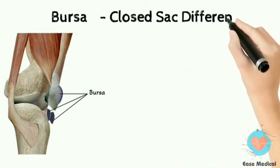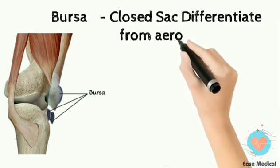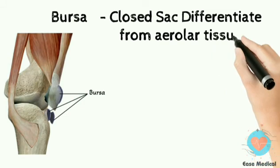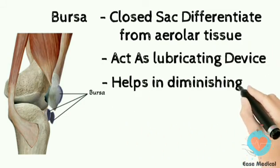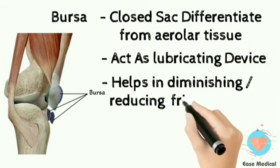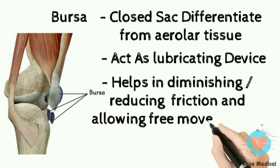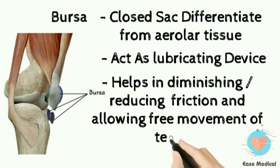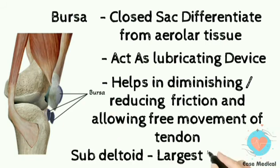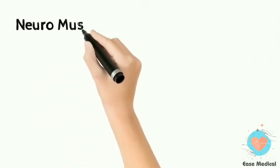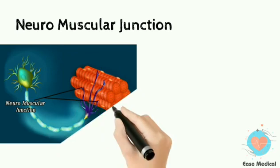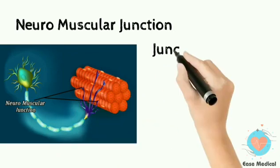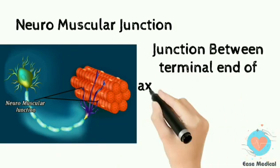Now let's talk about the bursa — a closed sac differentiated from areolar tissue that acts as a lubricating device. It helps in reducing friction and allowing free movement of tendons.